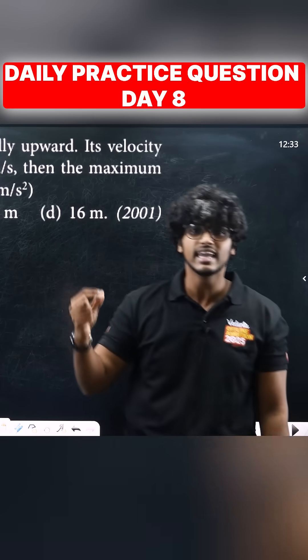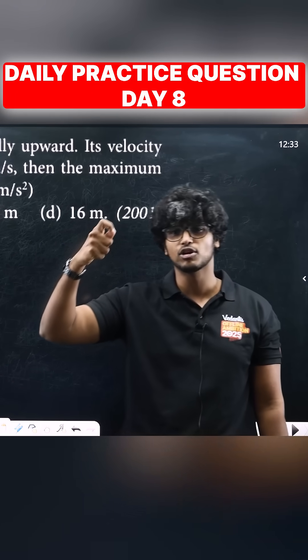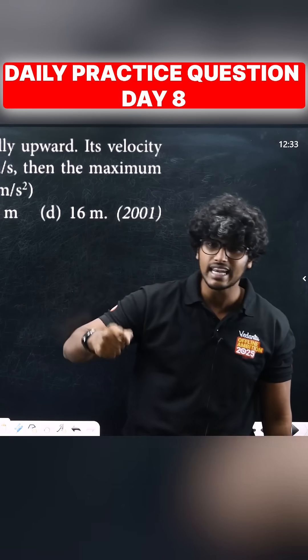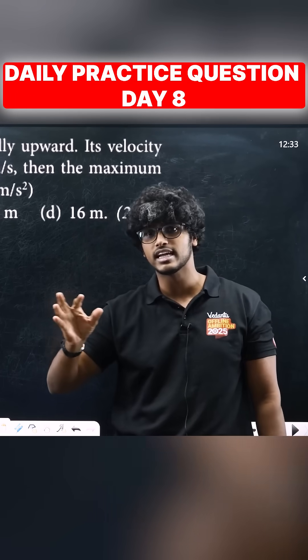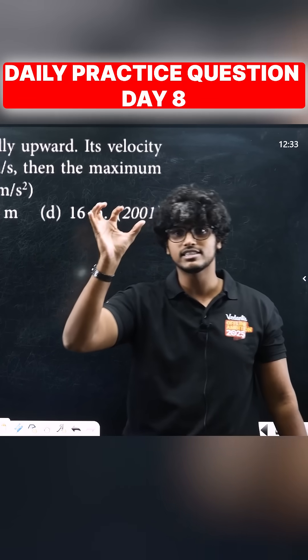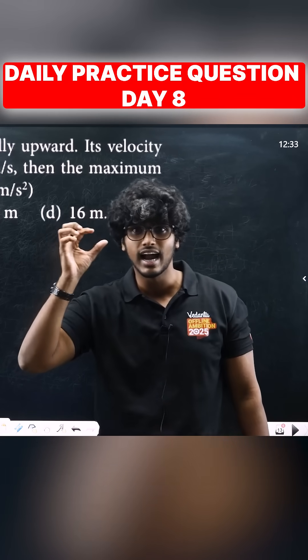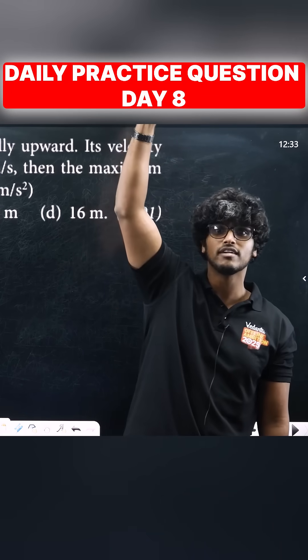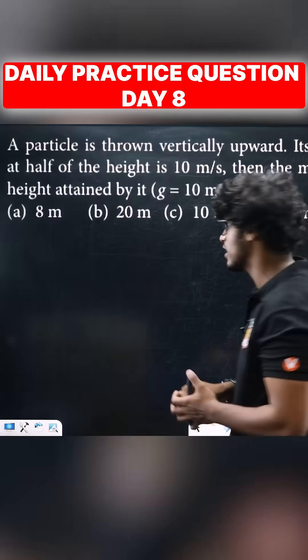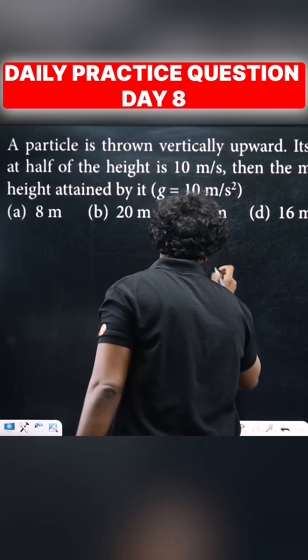We know the initial velocity u is 10 meters per second. At the maximum height, the velocity is 0. Let's solve this.